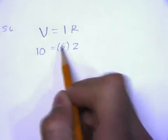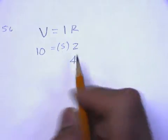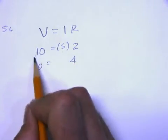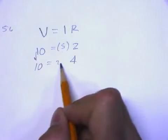So the current is 5, so if you double the resistance and you make it 4, hold this constant, well 10 divided by 4 is 2.5.